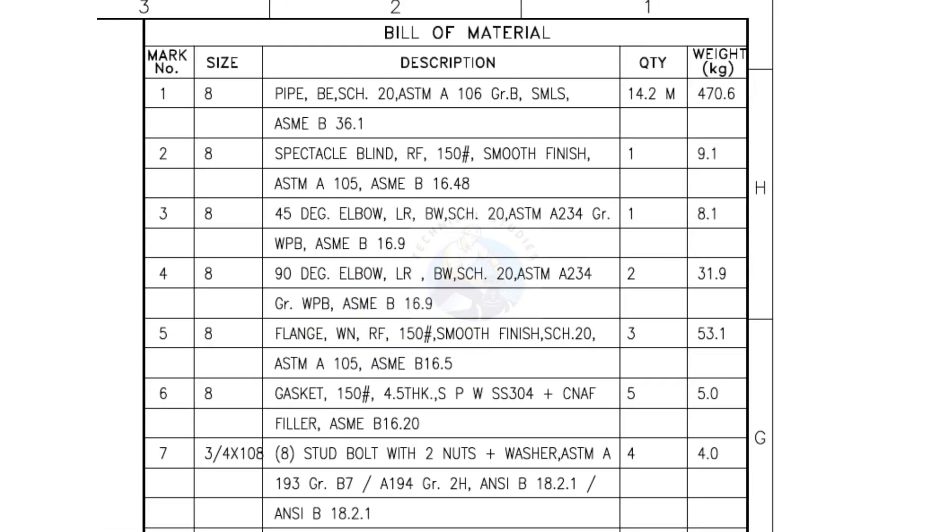Go to the material list. Item number 1 is bevel end, schedule 20, seamless pipe. Let us check what are the adjacent fittings.